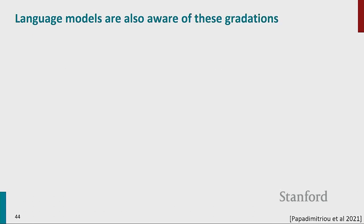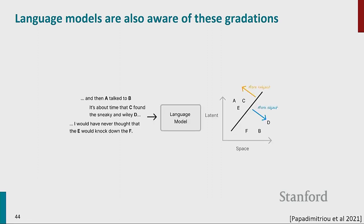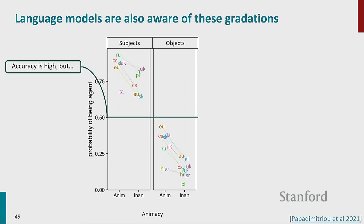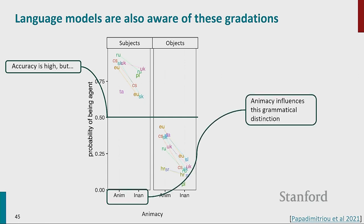Language models are also aware of these gradations. In our subject/object classification paper, mapping the probability from the classifier on the y-axis, we see high accuracy across many languages. Subjects are classified above the line, objects below. But animacy influences this grammatical distinction: if you're animate and a subject, classification is very certain; if you're inanimate and an object, very certain. Anything else is close to 50. So the meaning-structure relationship is reflected in language models — and that's not bad, it's good, because it's how humans are. We should temper our expectations away from fully discrete syntactic rules.